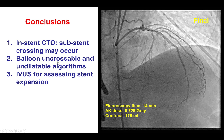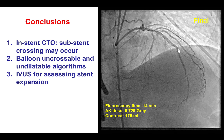This case illustrates the importance of having algorithms for potential challenges, which were the difficulty advancing a balloon and the difficulty in dilating a previously placed stent. Finally, in cases of stent problems — in this case stent thrombosis and stent restenosis — intravascular imaging is critical to ensure that an excellent final result is achieved to minimize the risk of recurrent stent failure.